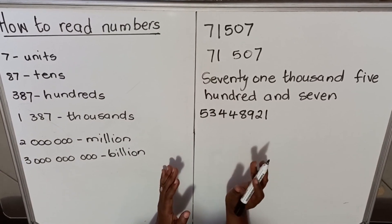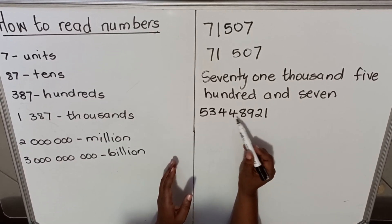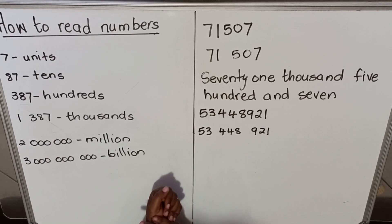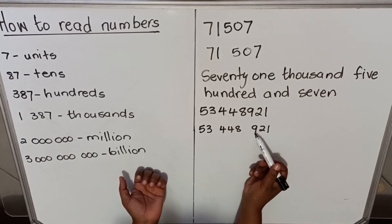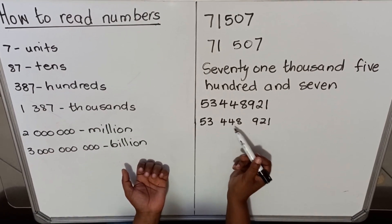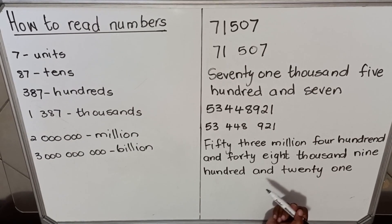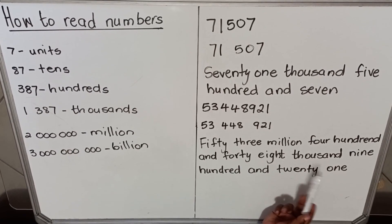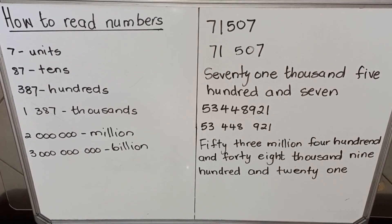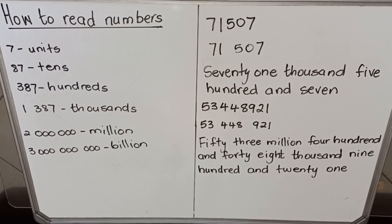Here's another number. Before we start calling it out, we're going to make it easier for ourselves — space it into groups of three. So it's one two three, space, one two three, space, one two three. Now it's easier to call out. You can see: hundreds, thousands, millions. So it's 53 million, four hundred and forty eight thousand, nine hundred and twenty one. The key is the spacing — when you space them, you can tell which are thousands, hundreds, and millions, and it's easy to call them out.